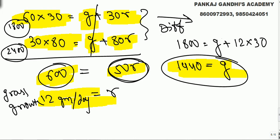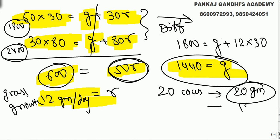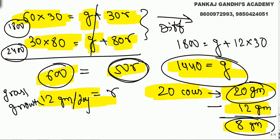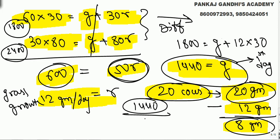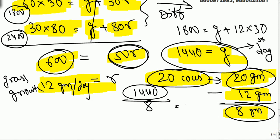We know g = 1440 grams is present in the lawn on day one. With 20 cows, eating is 20 grams per day but growth is only 12 grams per day, so there is a net deficit of 8 grams per day — just like a bank balance being drawn down. Dividing 1440 by 8 gives 180. So in 180 days, 20 cows will finish all the grass.